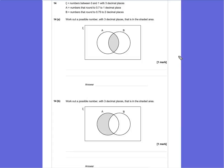Question 14. Numbers between 0 and 1 with 3 decimal places are represented inside this rectangle. Circle A are numbers that round to 0.7 to 1 decimal place and numbers inside circle B must be numbers that round to 0.75 to 2 decimal places.